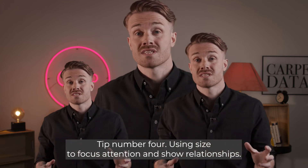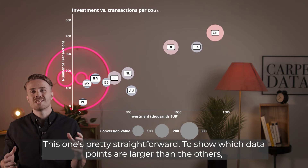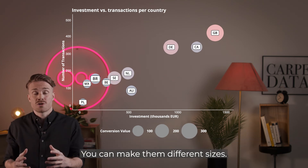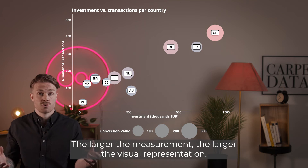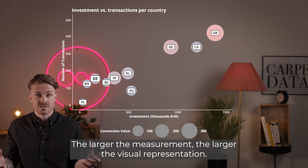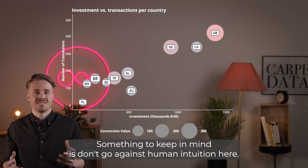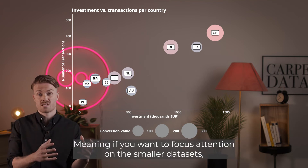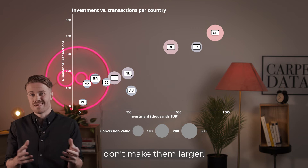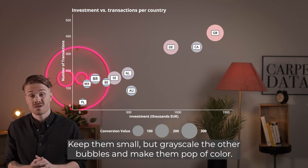Tip number four: use size to focus attention and show relationships. To show which data points are larger than others, you can make them different sizes — the larger the measurement, the larger the visual representation. Something to keep in mind: don't go against human intuition. If you want to focus attention on the smaller datasets, don't make them larger. Keep them small, but grayscale the other bubbles and give the smaller ones a pop of color.